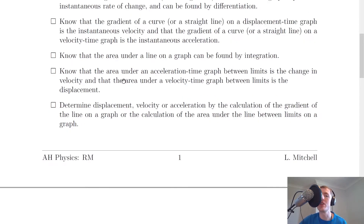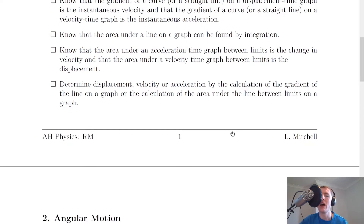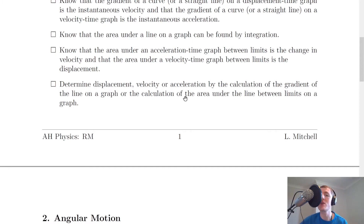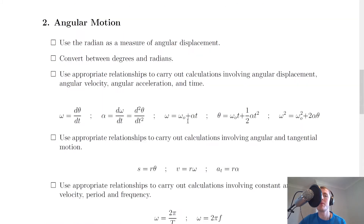You also need to know that the area under an acceleration time graph between limits is the change in velocity, and that the area under a velocity time graph between limits is the displacement. Lastly for this first section, determine displacement, velocity or acceleration by the calculation of the gradient of the line on a graph or the calculation of the area under the line between limits on a graph.